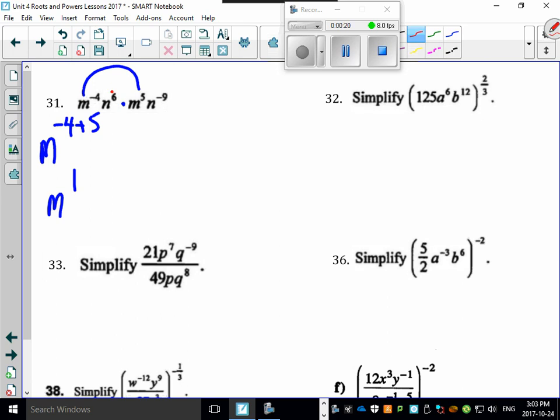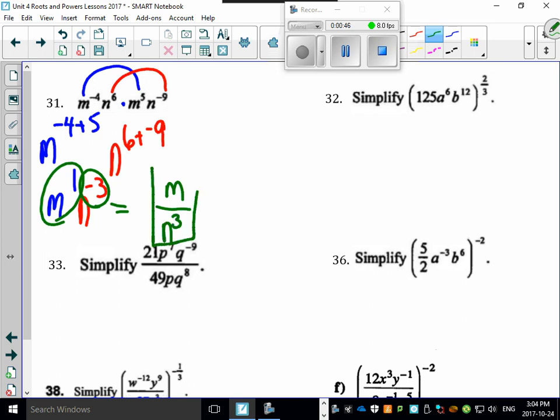Now look at this one. There's n to the 6 and n to the negative 9. Because it's multiplication, you're going to add that again. But the problem is you're going to have an n to the minus 3 here. I don't like leaving things like that, so first things first: m to the 1 is just plain old m. But now you've got this to the negative 3, which means to flip it. So this becomes n cubed, and that's your final answer.